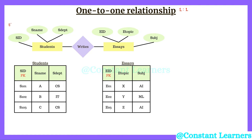Here we have the ER model with two entities: students and essays. The students entity has attributes student ID, student name, and student department. The essays entity has attributes essay ID, essay topic, and subject. Every student has to write an essay, but the catch is that every student will write one essay and the essay topic has to be unique — no two students can share the same essay topic. Only then a one-to-one relationship will be established: one student is corresponding to one essay and the essay topic cannot be repeated.